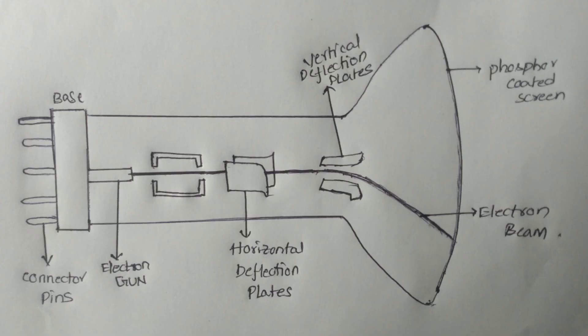The cathode ray tube has outer connector pins that we connect to the CRT. Next, there is an electron gun where electrons are produced, and we connect to the electron gun.